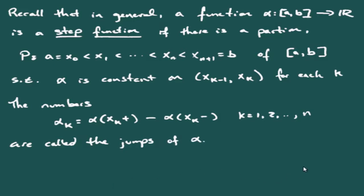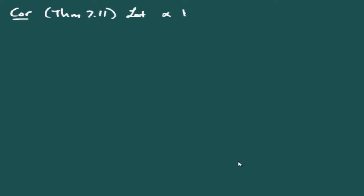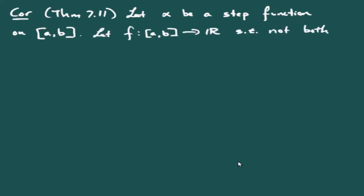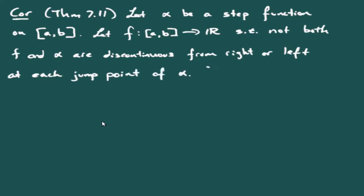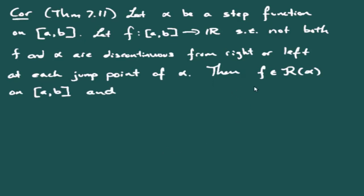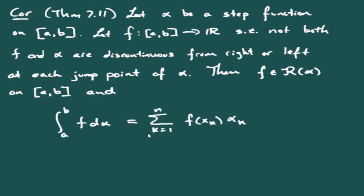Theorem 7.11: if α is a step function on [A, B] and f is a function on [A, B] such that f and α are not both discontinuous from the same side at each jump point of α, then f is Riemann-Stieltjes integrable with respect to α, and the integral equals the sum of f(x_k) · α_k over all jump points x_k.